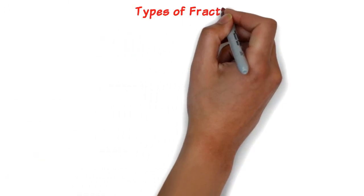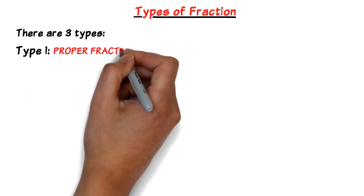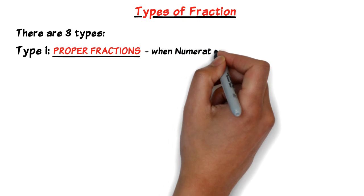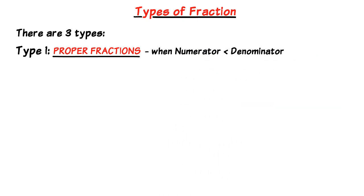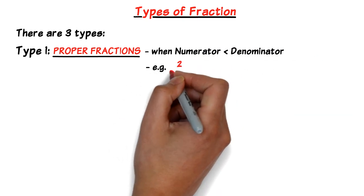So let's take a look at the different types of fractions that there are. There are 3 types. Type 1 is called the proper fraction. This is when the top number or numerator is less than or smaller than the bottom number or denominator. For example, we can have 2 over 3 or 2 thirds.